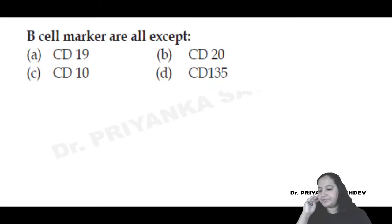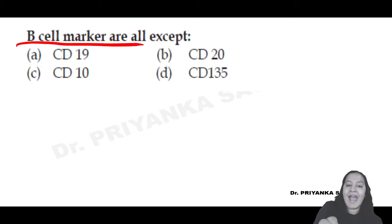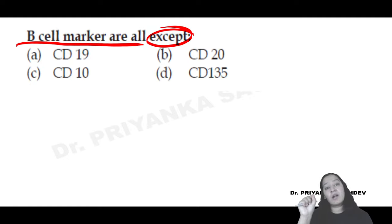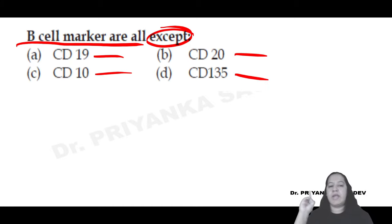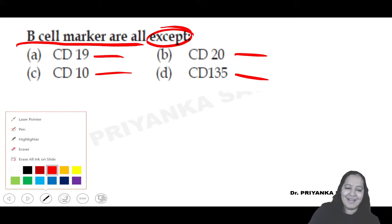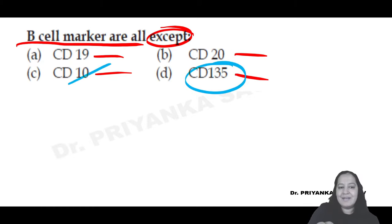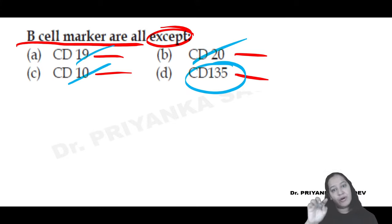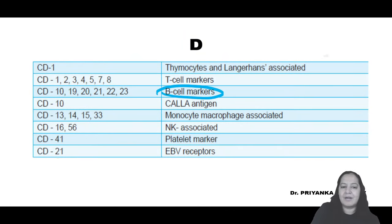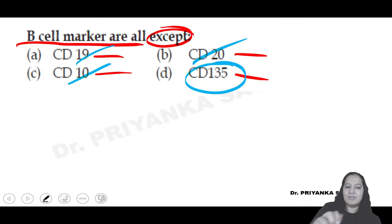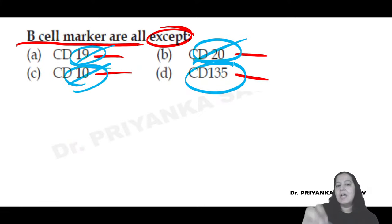Second poll: B cell markers are all except - CD19, CD20, CD10, or CD135? The correct answer is D - CD135. Because the B cell marker list is: 10, 19, 20, 21, 22, 24, 79A. CD135 is not in the list, so it is not a B cell marker. The other options (19, 20, 10) are all present in the B cell marker list.